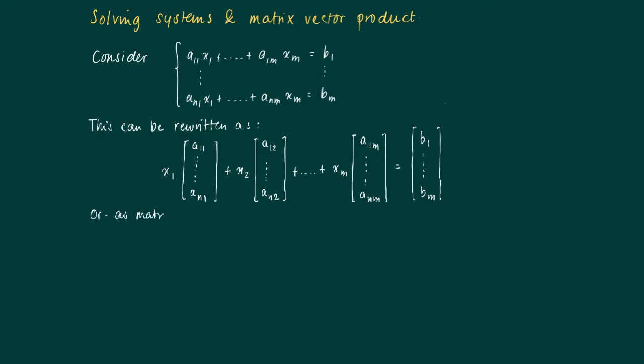Then we can write this as a matrix vector product. Ax is b.